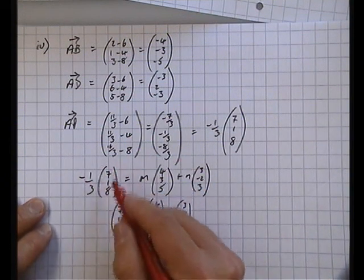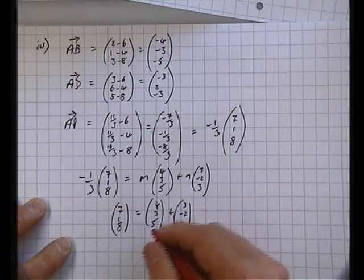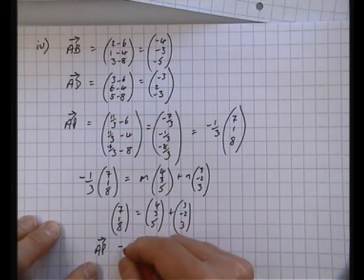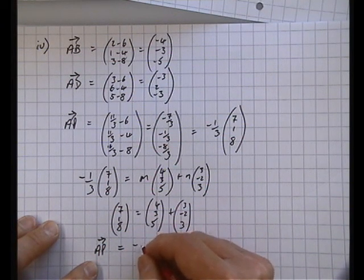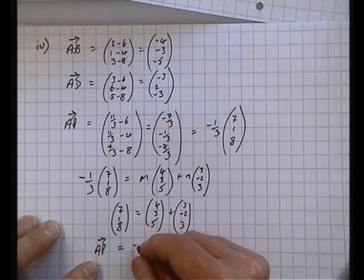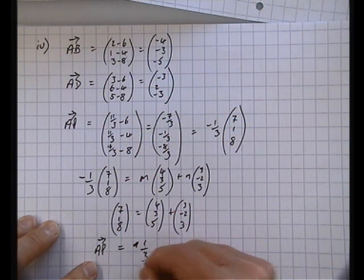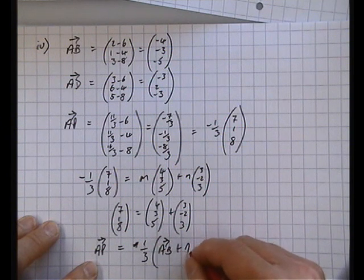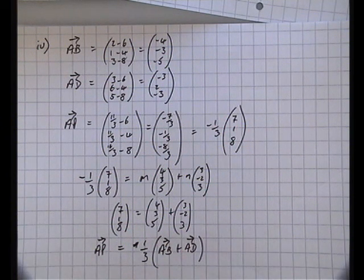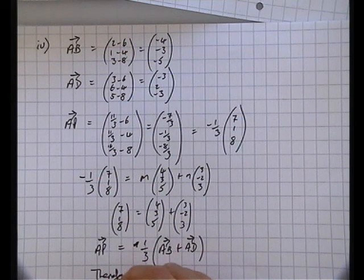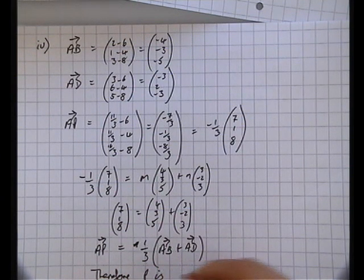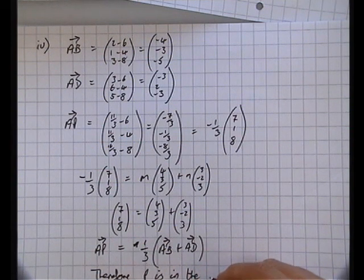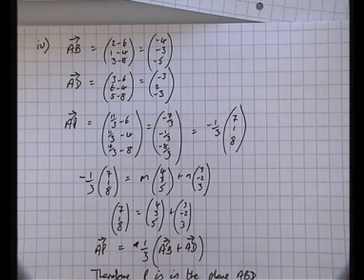So AP therefore is going to be -1/3 of AB plus AD. So AP, and therefore P, is in the plane A, B, D, which is what they wanted us to show.